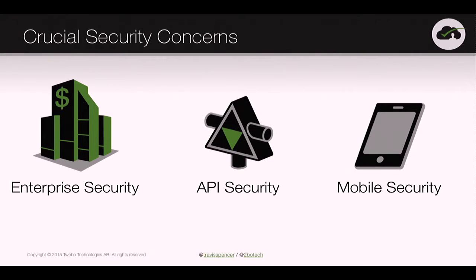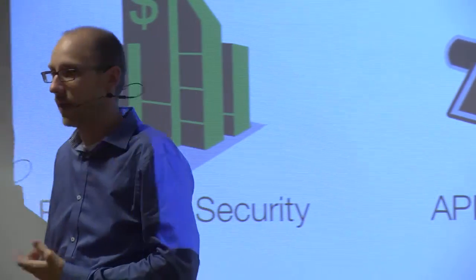We have to have a holistic approach that includes enterprise security — checking identities, giving out employee badges, checking your customers, having them sign different forms. Intrusion detection on your servers. Mobile security, more generally endpoint security — virus scanning, MDM, those sorts of things. API security is of course part of that, but we need this holistic approach if we're going to actually create a secure organization for accessing data.